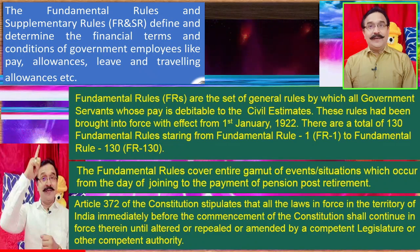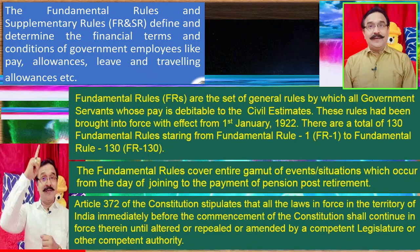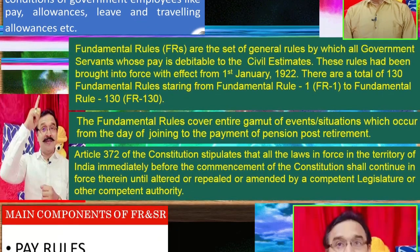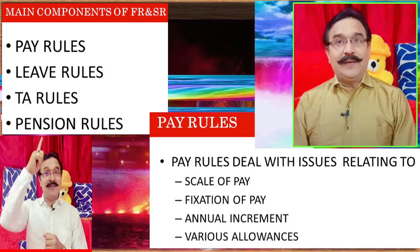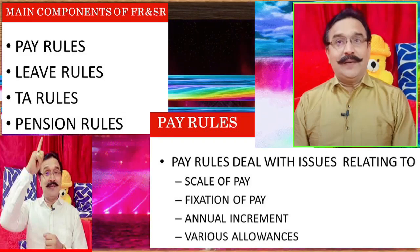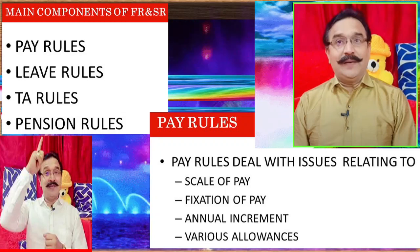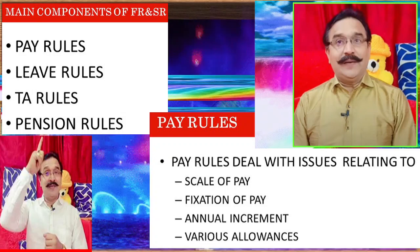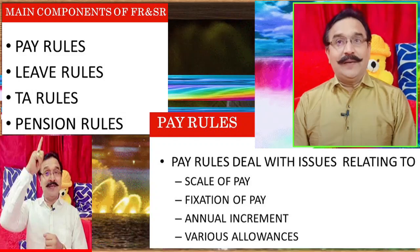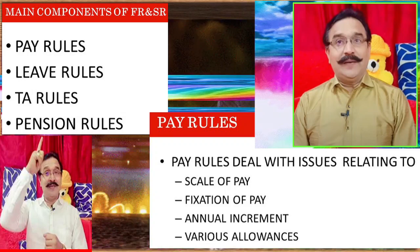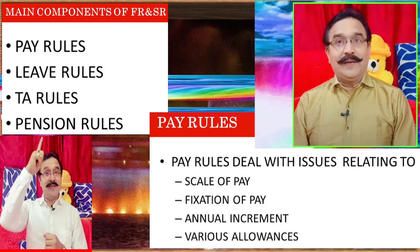The main components of FR-SR are: Pay Rules, Leave Rules, TA (Travelling Allowance) Rules, and Pension Rules. These four main components of a service career are covered by FR-SR. Pay rules apply every month as salary; leave rules apply as and when required; travelling allowance rules govern travel needs; and pension — whether old pension scheme or new pension scheme — is also covered as a main component within FR-SR.